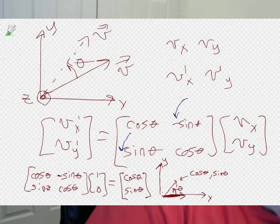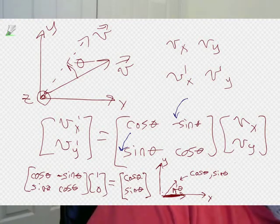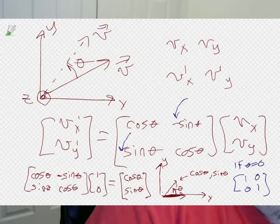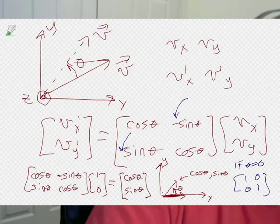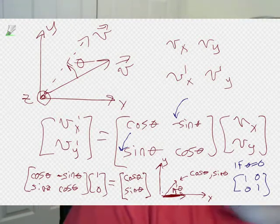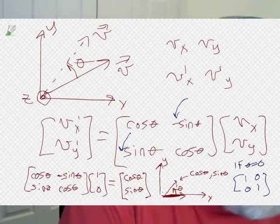If theta equals zero, this should be the identity matrix. Cosine of zero is one and sine of zero is zero, so you get the identity. A lack of rotation should give you the same vector you started with — and it does.